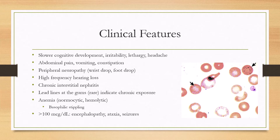In children, lead poisoning can cause slower cognitive development, irritability, lethargy, or headache. They can also develop abdominal pain, vomiting, and constipation. Peripheral neuropathy is rarer, but when it occurs it typically presents as wrist drop or foot drop. There can also be high-frequency hearing loss with chronic exposure, and chronic interstitial nephritis.